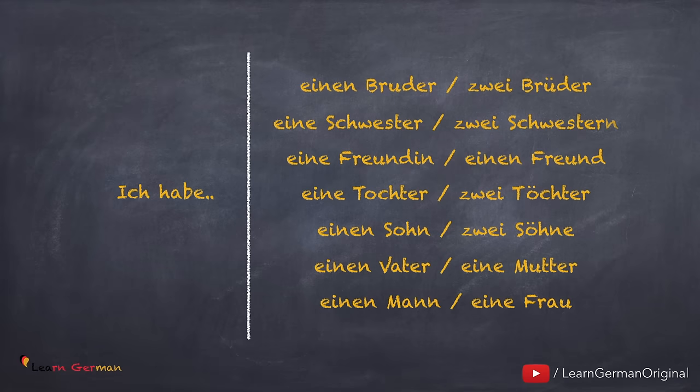When you're talking about your family you can also say: ich habe einen Bruder oder zwei Brüder, eine Schwester oder zwei Schwestern, eine Freundin oder einen Freund, eine Tochter oder zwei Töchter, einen Sohn oder zwei Söhne, einen Vater und/oder eine Mutter, einen Mann oder eine Frau, etc.